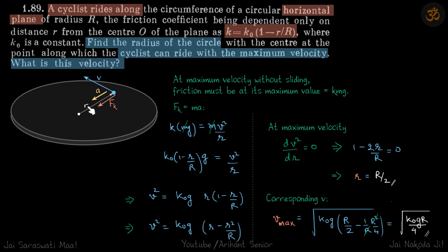We've considered this distance r where he's almost slipping, which means the frictional force must be maximum. At maximum velocity without sliding, friction must be at its maximum value, that is k times normal, which is kmg.